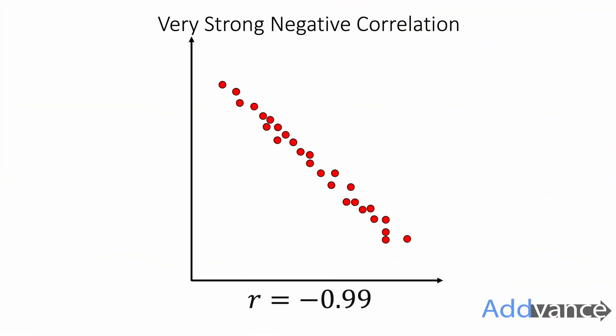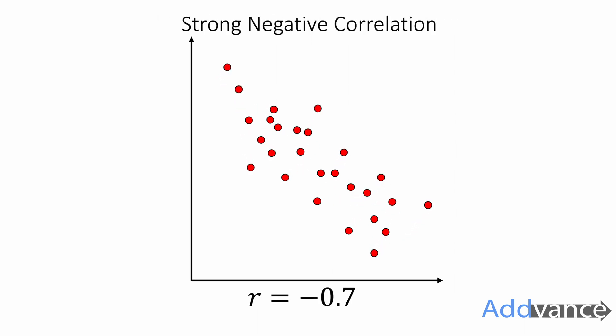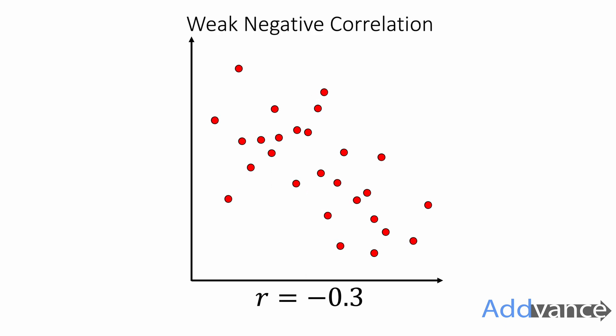Now I want to show you what different correlations look like. Here is a very strong negative correlation, and the value of r here will be minus 0.99. This is a slightly weaker but still strong negative correlation, and the r value here is minus 0.7. Here it's getting quite weak but there is still a general negative trend in the data. The r value is minus 0.3.